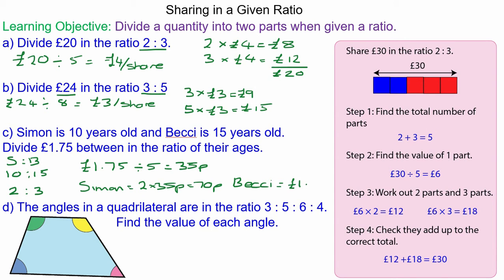And the last question, we need to know about angles in a quadrilateral and they add up to 360 degrees. And the total amount of shares is 3 add 5 add 6 add 4 which is 18 shares.